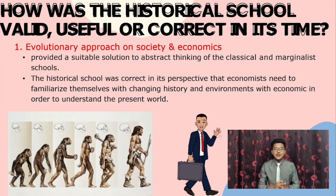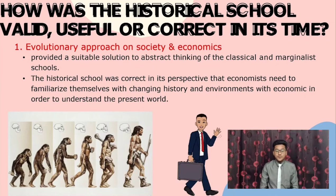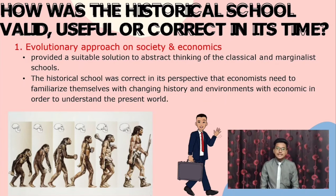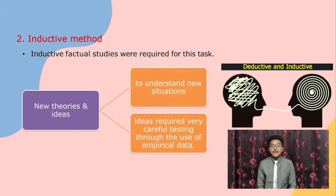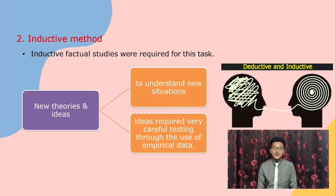How was the historical school valid, useful, or correct in its time? First, the evolutionary approach to society and economics provided a suitable counterbalance to the abstract thinking of the classical and marginalist schools. The historical school was correct that economists needed to familiarize themselves with changing history, environments, and social evolution to understand the present world. Secondly, inductive factual studies were required for this task. New theories and ideas had to be developed to understand new situations, requiring careful testing through the use of empirical data.